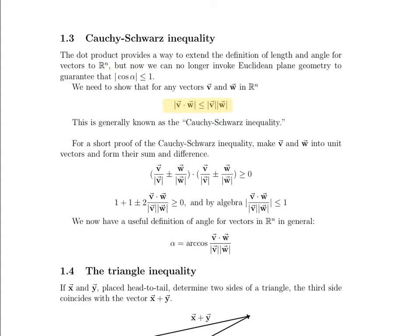When we're not in two-dimensional space or using plane geometry, what does it mean to say the angle between two vectors when we're in four-dimensional or five-dimensional space? The dot product gives us a way to extend the definition of length and angle to these higher dimensions, but we cannot take for granted the things we know when working in the plane. So let's take a look at how we can prove the Cauchy-Schwartz inequality.